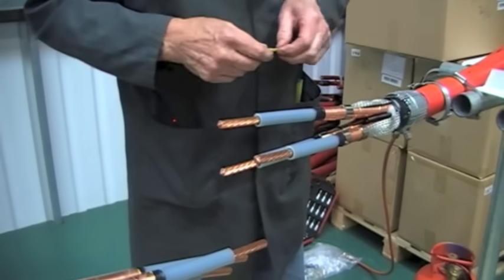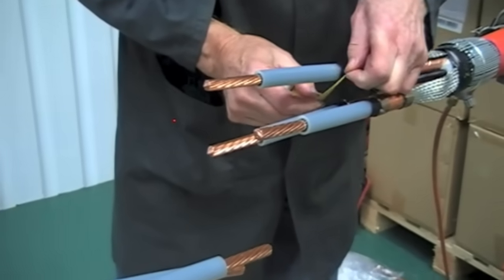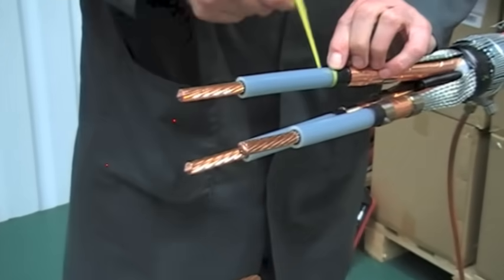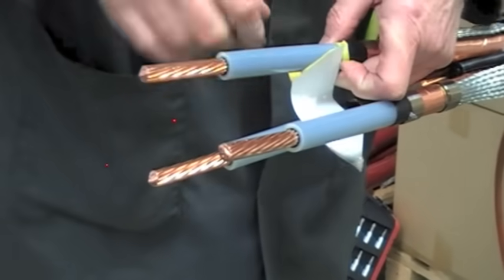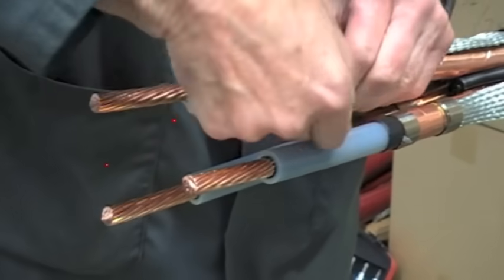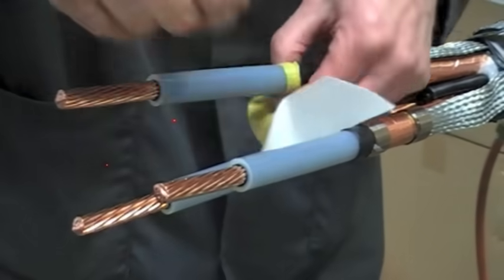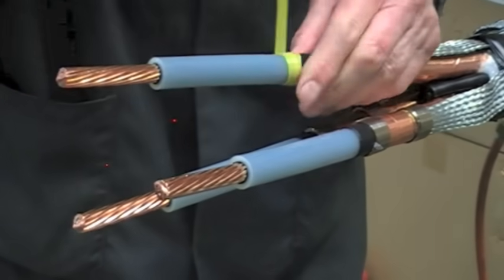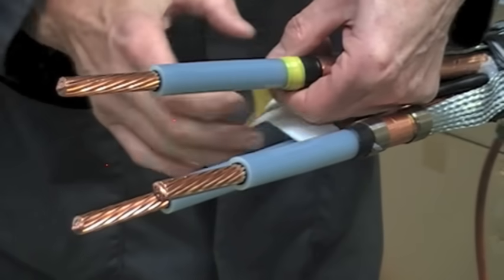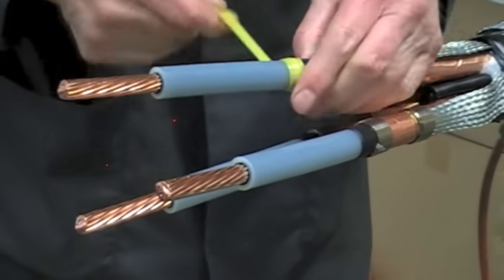Now take the yellow stress relieving mastic, apply with a thin edge, stretch and extend onto the primary insulation by 10mm, back onto the semi-conductive layer and just catch the copper tape screens to keep them in position.